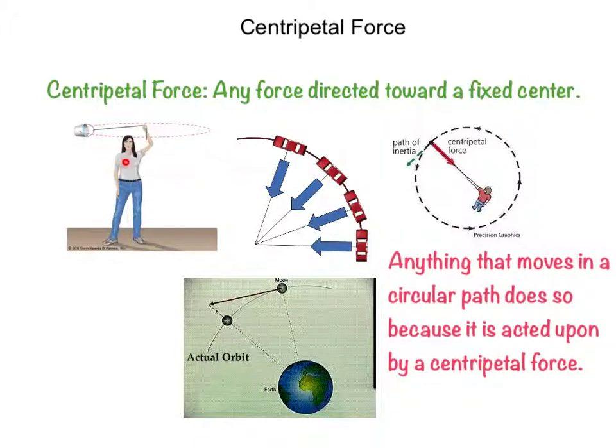So in each of these examples here, even though the string provides a tension, that tension results in a centripetal force. In here we've got friction that results in a centripetal force. Gravitational force is resulting in a centripetal force.